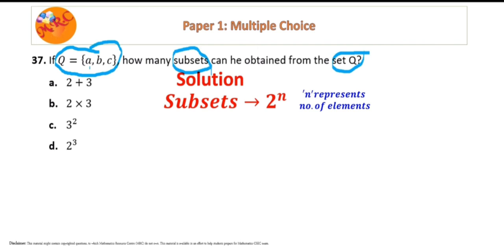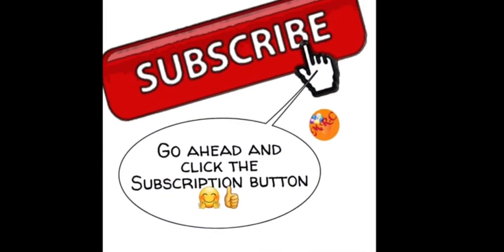Now looking at set Q, we have one, two, three elements. So this is just going to be 2 raised to the third power. And that brings us to the end of our video. Remember to like and subscribe, thank you.